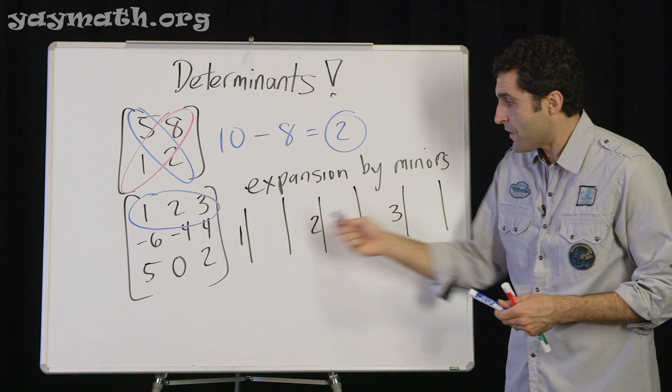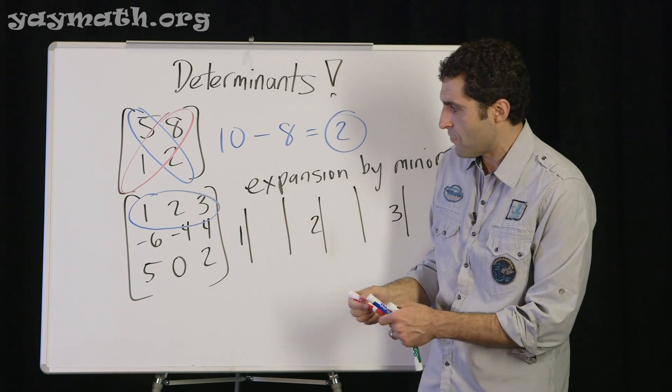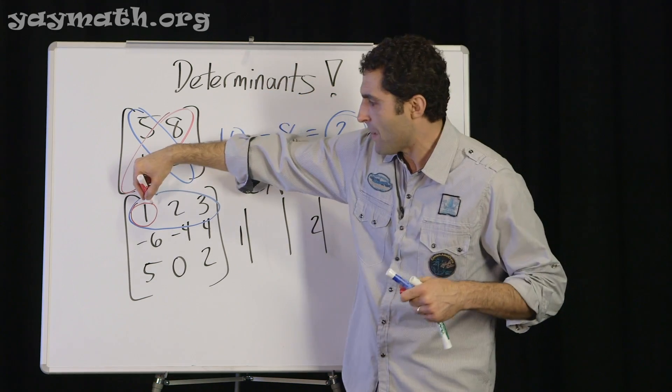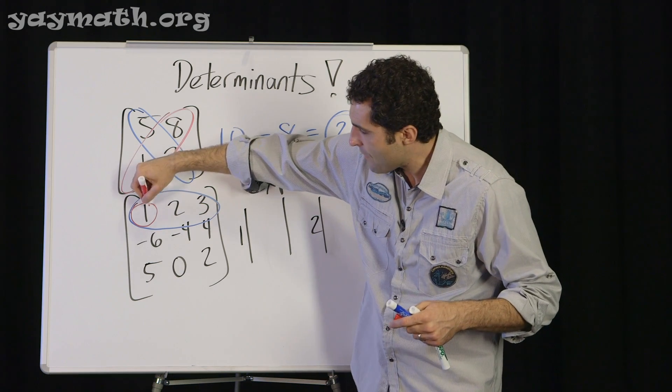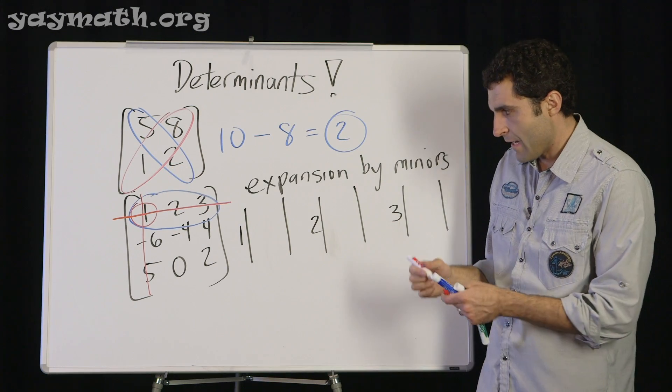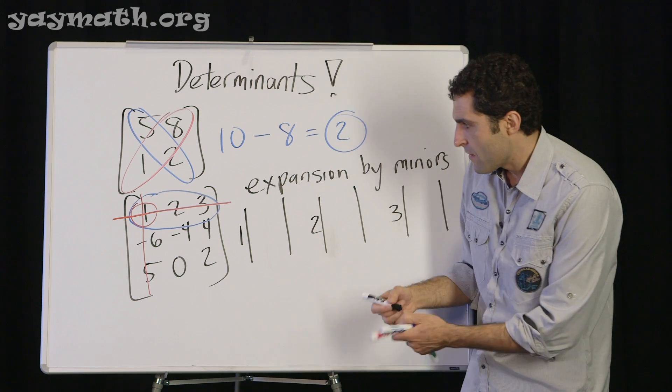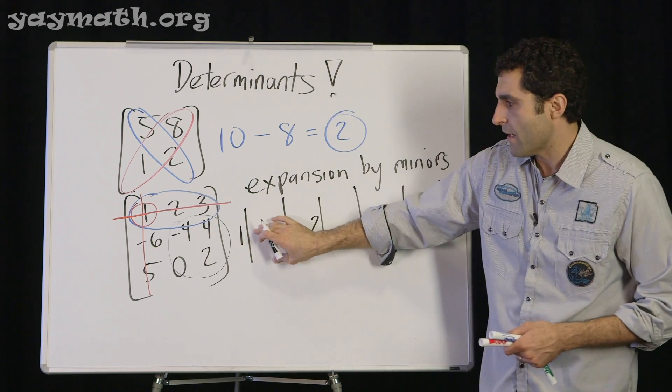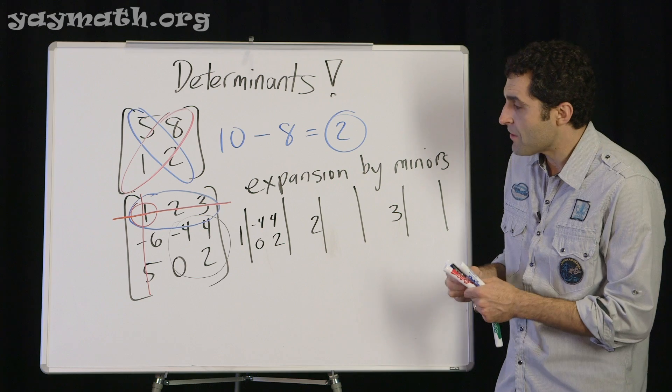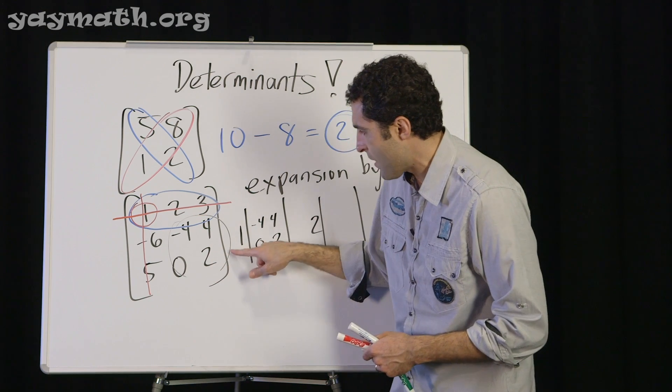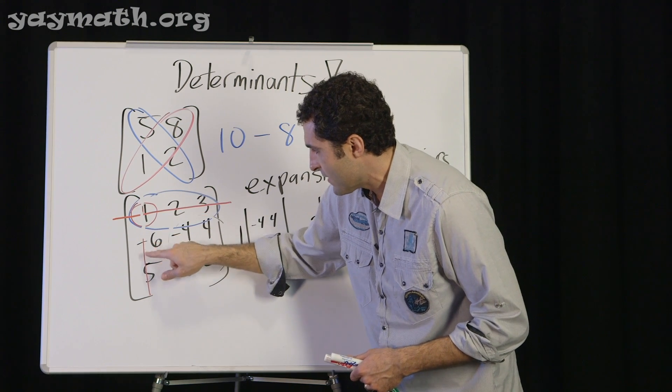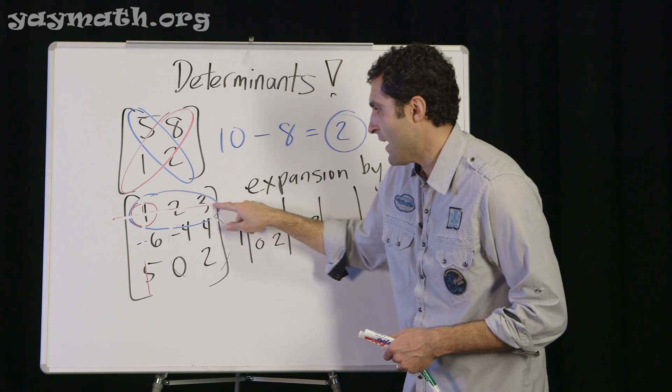This is how it works: basically you pick any row or any column. Let's say if I wanted to pick the first row. What I would do is that one after the other - let's say 1 and then 2 and then 3 - I would multiply each of those by a two by two matrix. The two by two matrix that we need to get is actually relative to the 1, 2, and 3. So if I start with 1 as my target, I eliminate its column and eliminate its row, and I'm left with this two by two matrix. So I'm going to put this two by two matrix here next to the one: negative 4, 4, 0, 2.